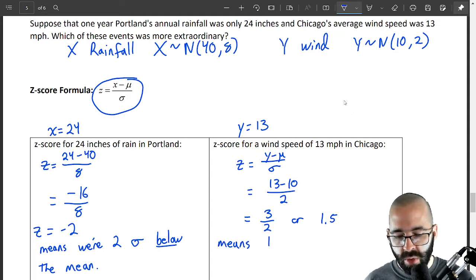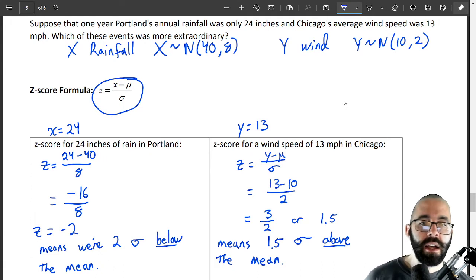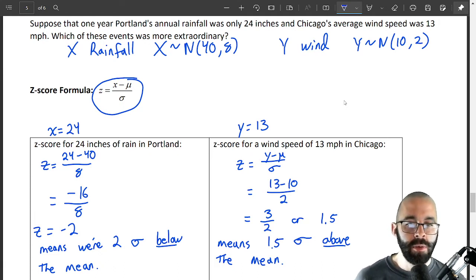That means 1.5 standard deviations above the mean. The question is, what's more unlikely? Are you more likely to be 2 standard deviations below or 1.5 above? Well, it's symmetric. The negative sign doesn't even matter for this problem for what's more likely.